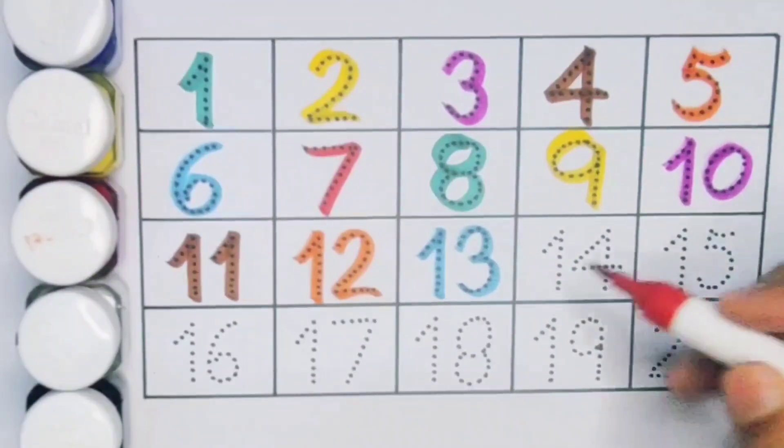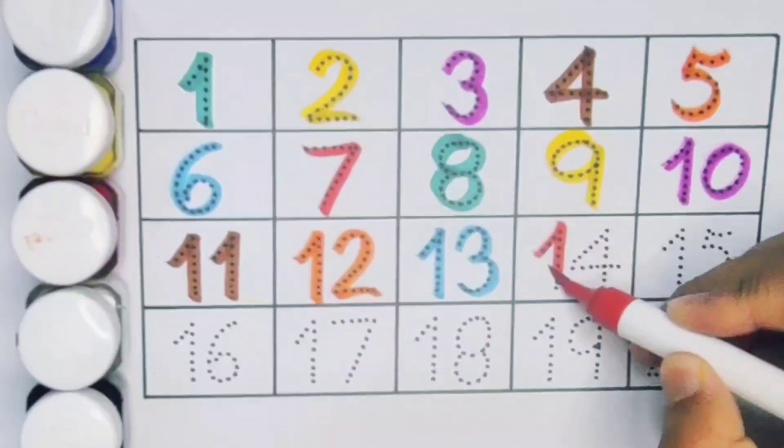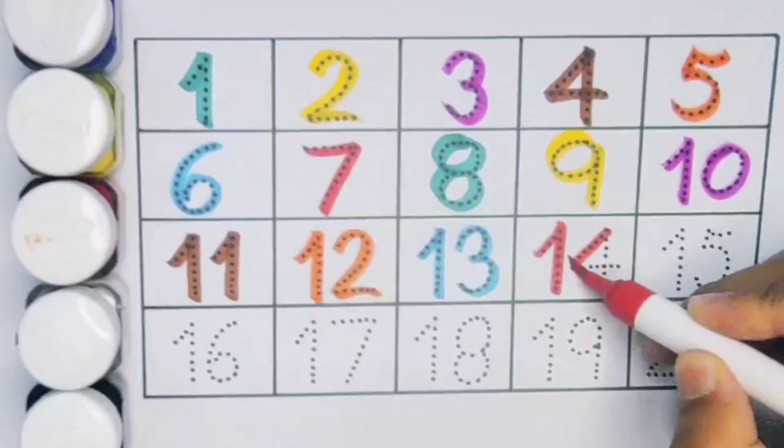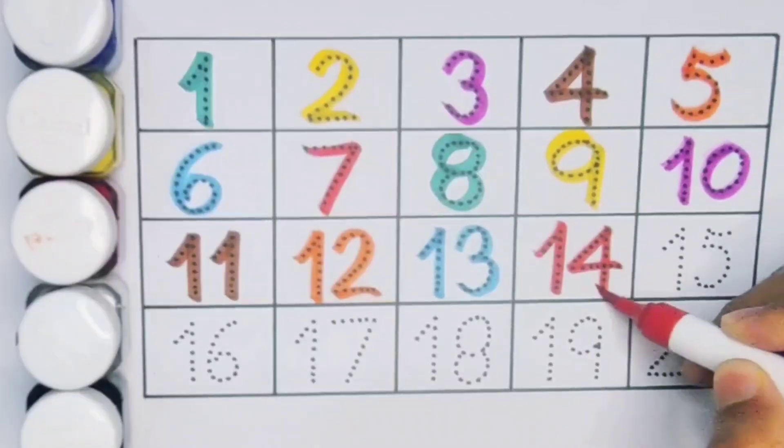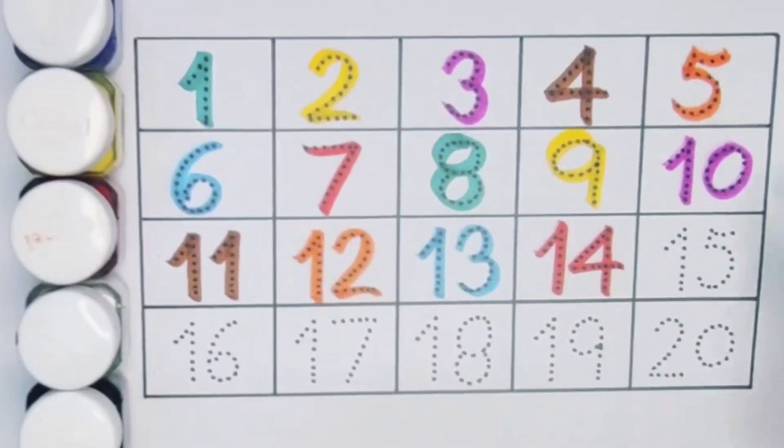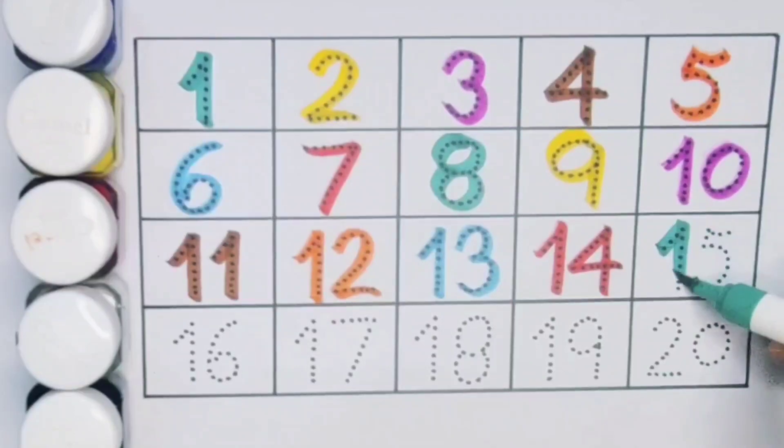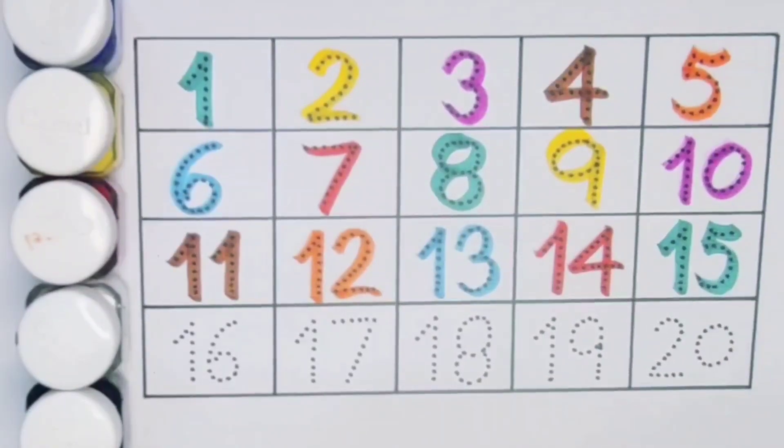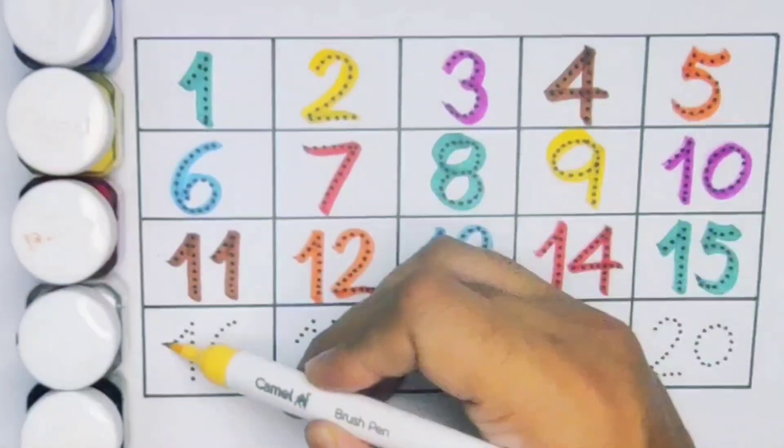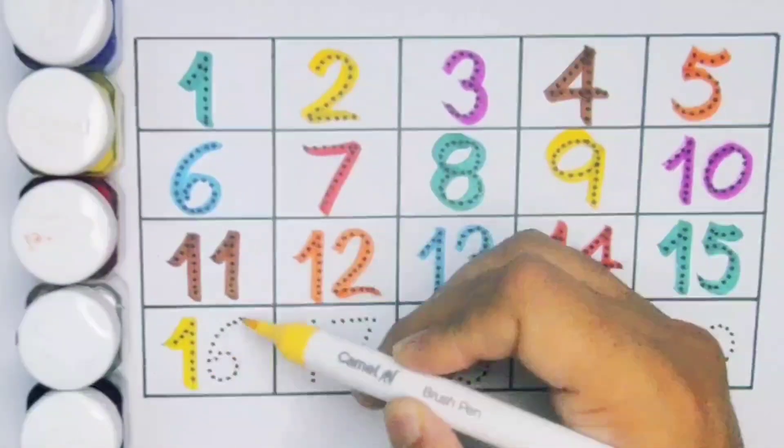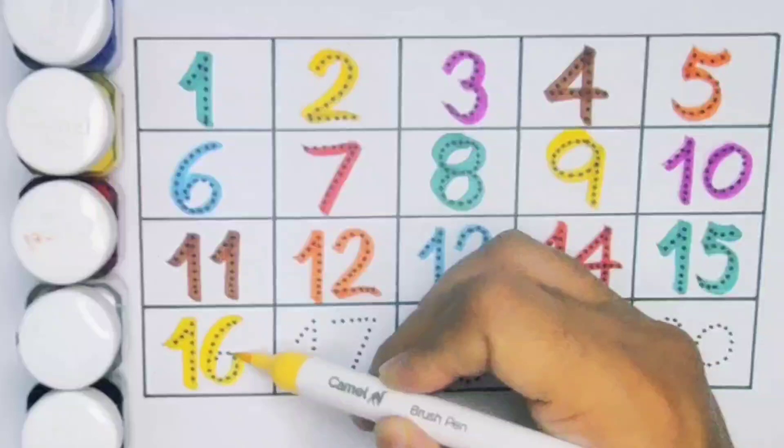Next kids 14, 1, 4, 14, number 14. Next kids 15, 1, 5, 15, number 15. Next kids 16, 1, 6, 16, number 16.